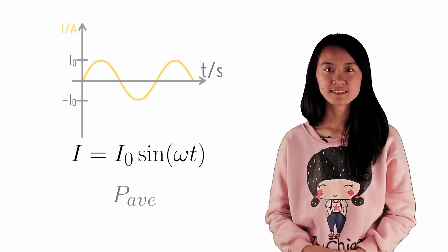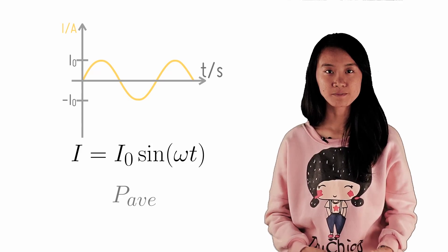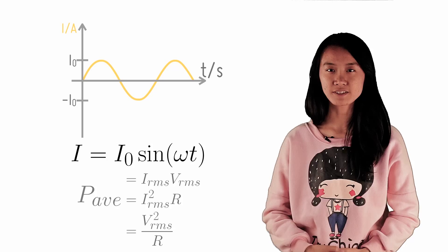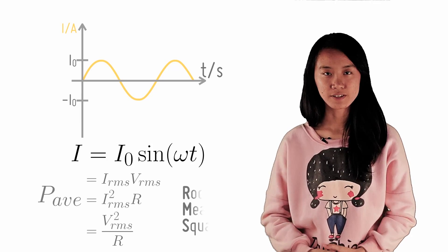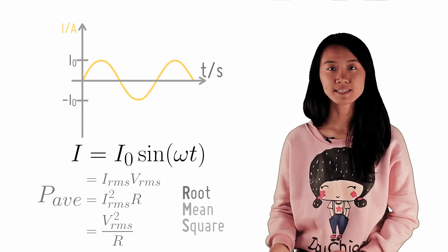As mentioned in the previous lesson, this can be easily done by first finding the root mean square current or voltage of the sinusoidal AC. You have learnt how to find the RMS current of a general AC. We will apply the same steps here.